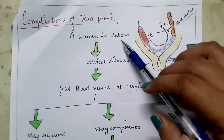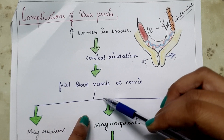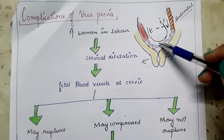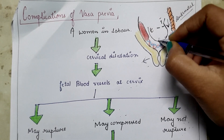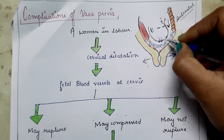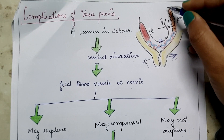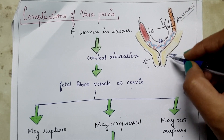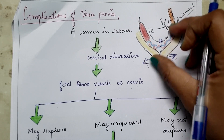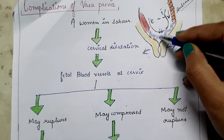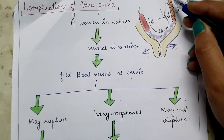Next are the complications of Vasa Previa. During labor, uterine contractions cause cervical dilatation. Since fetal blood vessels are present over the internal os of the cervix, the presenting part may put pressure on the fetal blood vessels, compressing them, resulting in decreased blood supply to the fetus and decreased fetal heart rate. Alternatively, as the cervix dilates, the fetal blood vessels may rupture, causing fetal blood loss, decreased blood supply to the fetus, and the fetus may die.